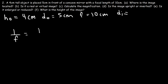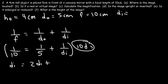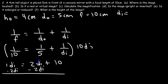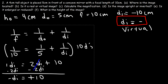Using 1/f equals 1/dO plus 1/dI, with f equal to 10 and dO equal to 5, multiply both sides by 10dI. The 10s cancel giving dI; 10dI divided by 5 gives 2dI; and 10dI divided by dI gives 10. Subtracting 2dI from both sides: 1dI minus 2dI equals negative dI, so negative dI equals 10, meaning dI equals negative 10. Because dI is negative, the image is virtual.